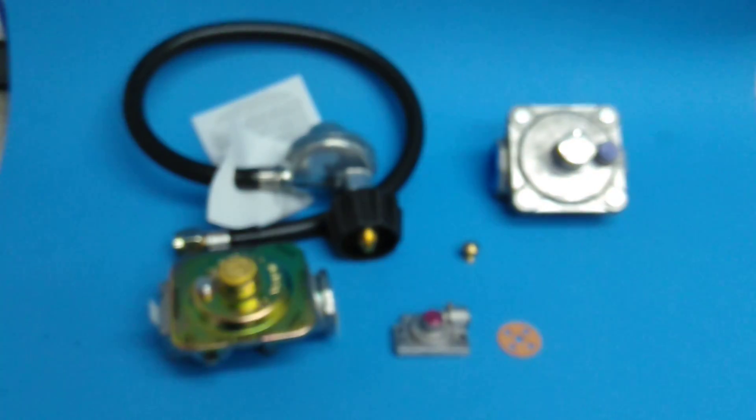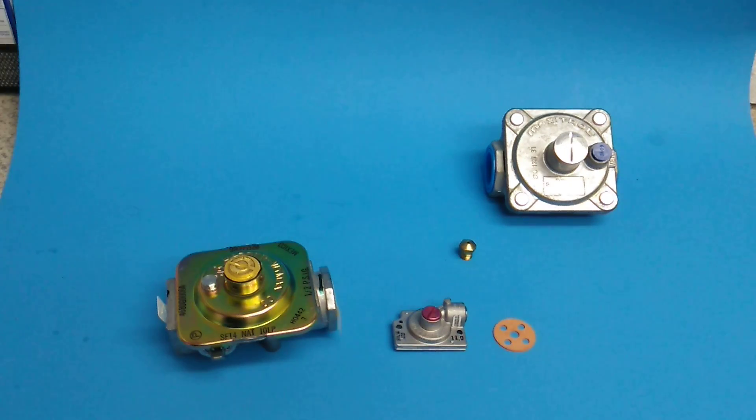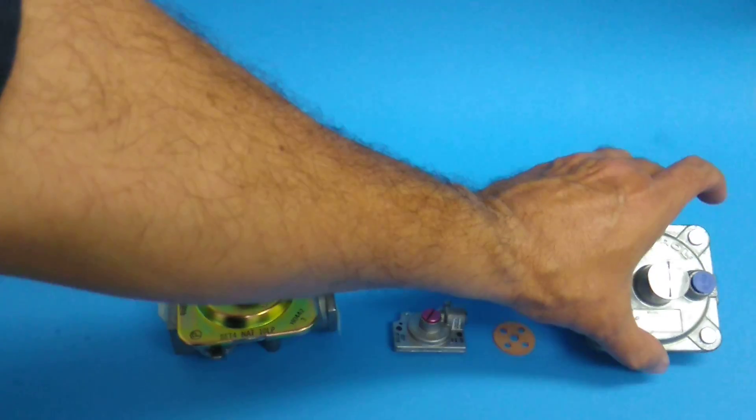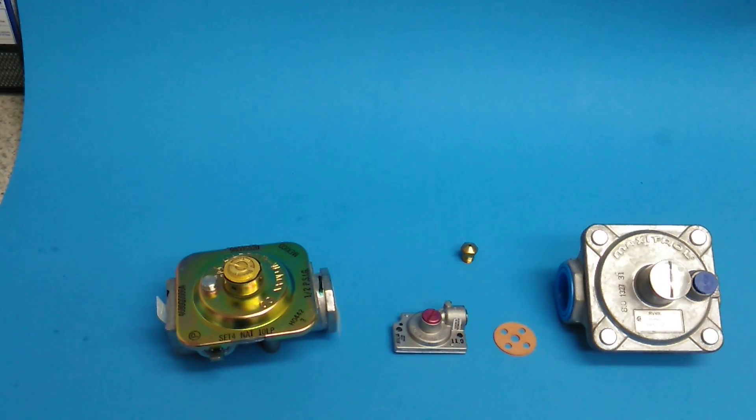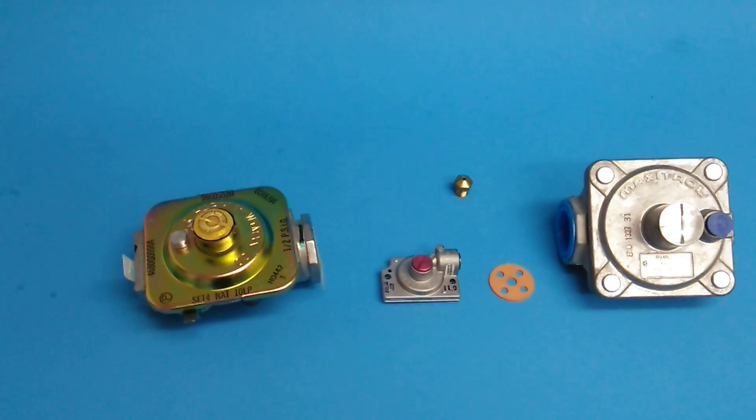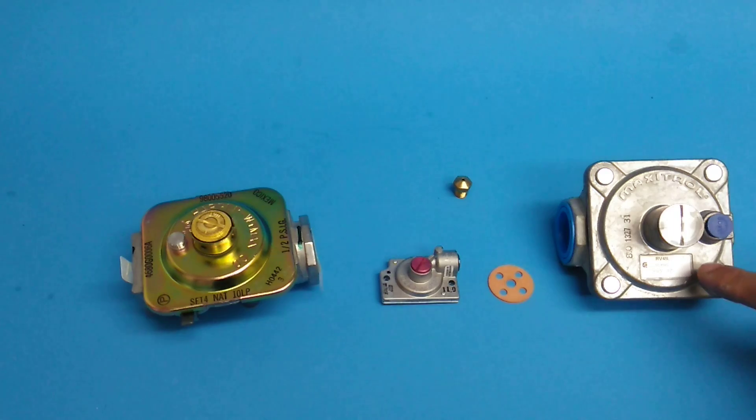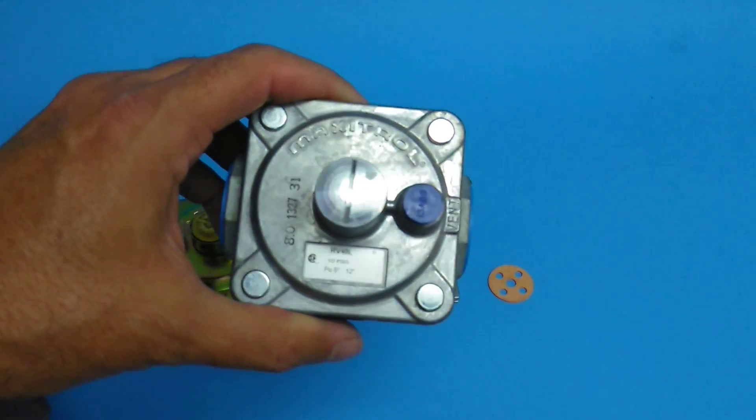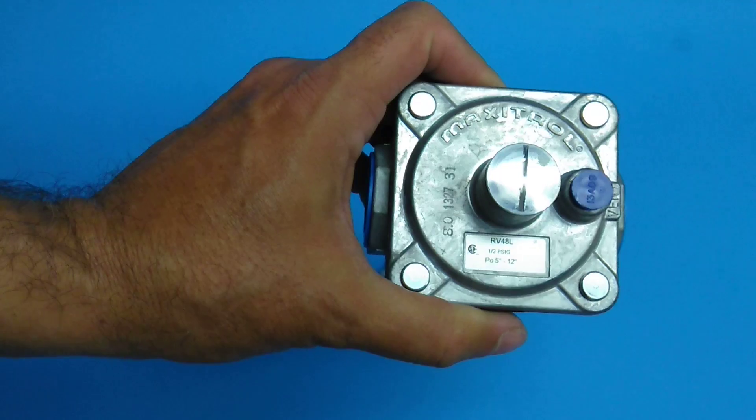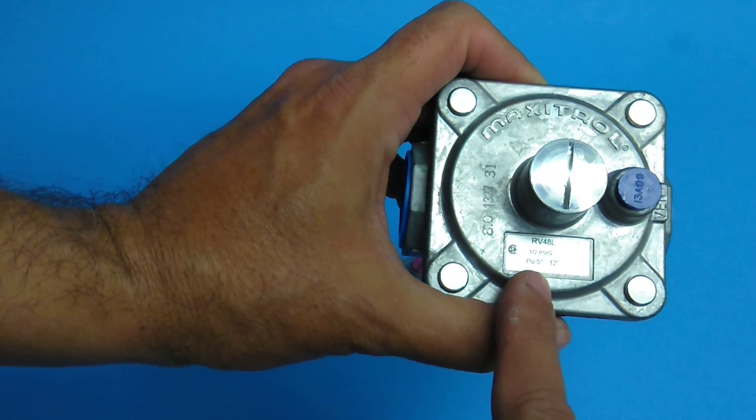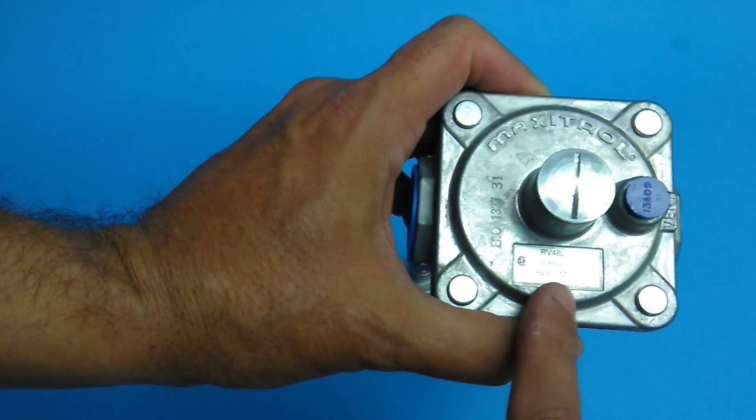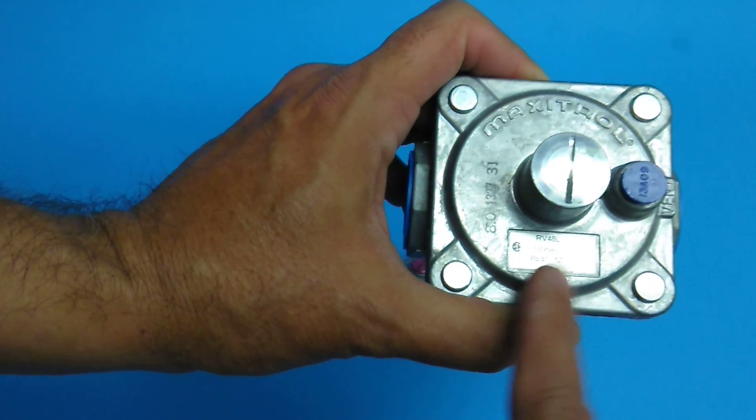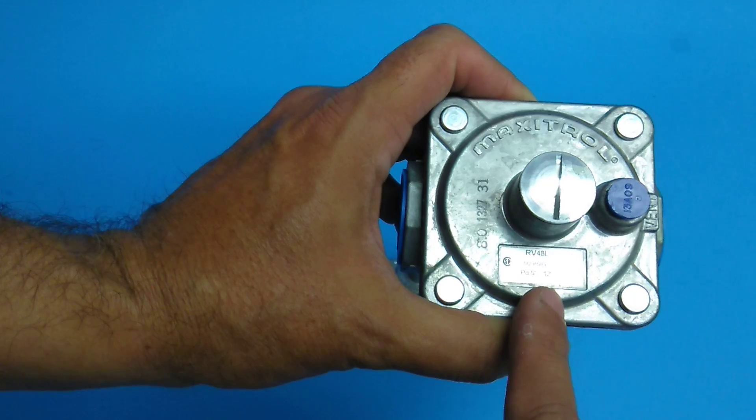So I'm going to take this one out of here. And we're going to talk about the other regulators. So you have a regulator made by Maxtrol. The RV48L. This one here also has a lid, but it cannot be changed from one gas to another. If you notice the rating is P.O. 5 inches to 12 inches. That means inches of water column. This is a propane regulator.